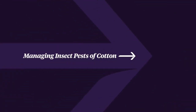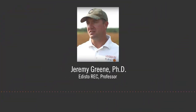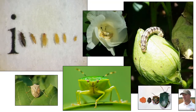Producers of cotton in South Carolina and the southeastern United States face many challenges, and one of those is managing insect pests in the crop. The main insect pests of cotton in this state and region are thrips, bollworm, and stink bugs, but we sometimes have issues with additional arthropods such as aphids, spider mites, plant bugs, grasshoppers, cutworms, and others. I will limit this very short segment to the major problem species and what we have discovered about managing them.